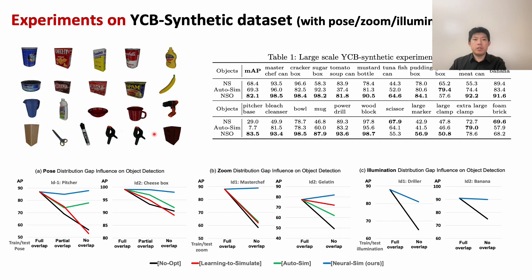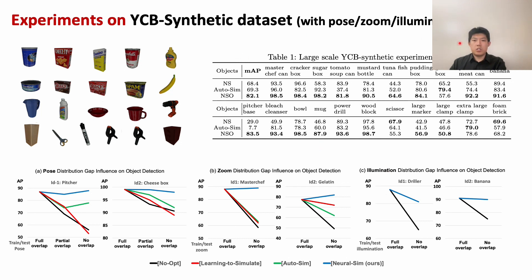We conduct experiments on different datasets. First, on the YCB synthetic dataset, which has 21 different household objects. The x-axis represents the increasing train-test gap, and the y-axis represents accuracy. The baselines show that with larger train-test gaps, performance drops significantly. But our method can fill the gap in pose, zoom, and illumination train-test domain gap. On the larger dataset across all objects, our average mAP also shows big improvement.